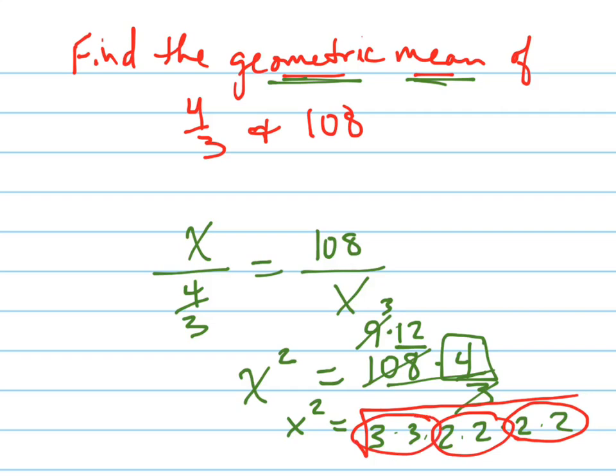So what's going to come out? The square root. There is going to be a 3, a 2, and a 2. So 3 times 2 times 2 is 12. The square root of that number is 12. So x equals 12.